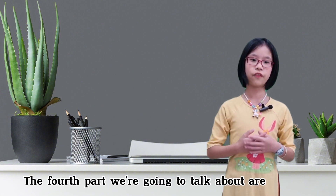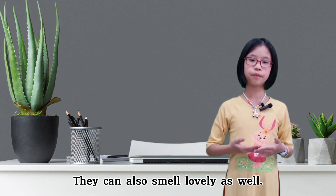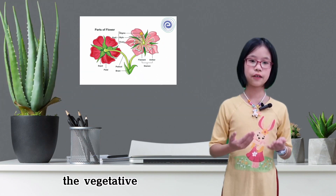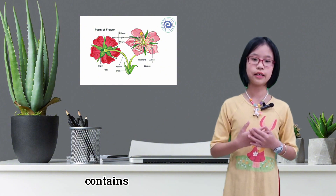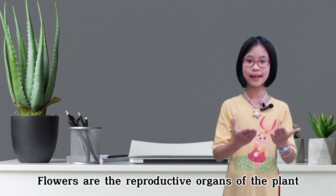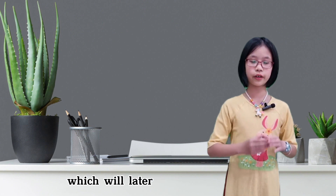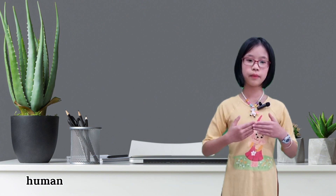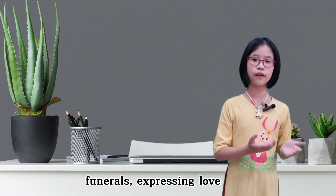The fourth part we're going to talk about are flowers. Flowers look pretty and come in lots of different colors, and they can also smell lovely. There are two main parts of flowers: the vegetative parts consist of the petal and sepal, and the reproductive part contains the stamen and pistil. Flowers are the reproductive organs of the plant. They provide nectar to attract pollinators like honeybees, which convert it into honey. Because of their brightly colored petals, humans cultivate and use flowers for various occasions such as weddings, funerals, expressing love, etc.